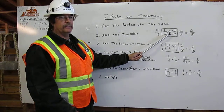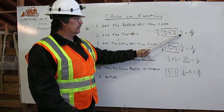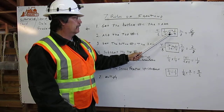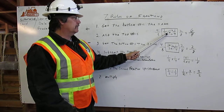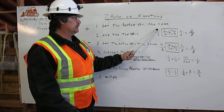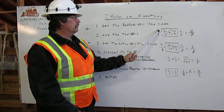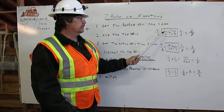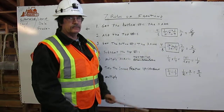Then I multiply the two times the four to come up with eight, then the two times the one to come up with two. I go the other way — four times two is equal to eight, and four times one is four. Then I add the top numbers: four plus two equals six. Bring the eight over, and you have six-eighths.